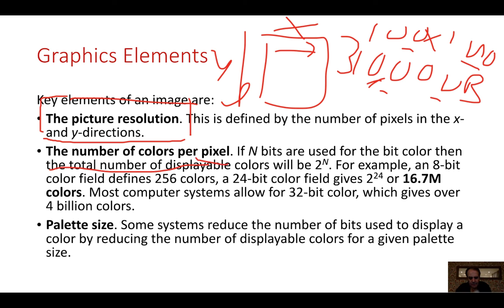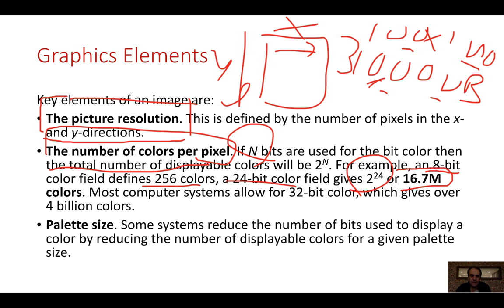We also have the number of colors per pixel, related to the number of bits stored per color channel. With 8 bits we only get 256 colors, but with 24-bit color we have 2 to the power of 24, which is 16.7 million colors — the standard on most color monitors. As long as a monitor supports 16.7 million colors, we can render colors quite well.